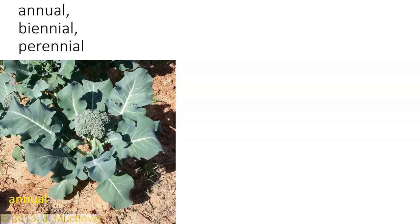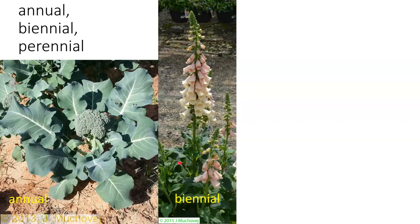A biennial takes two growing periods. This particular plant is called foxglove. It forms a basal rosette in the beginning and will grow from one year to the next as a basal rosette. Then in the second year it shoots up and flowers, producing this magnificent plant — and then at the end of that time it dies off.